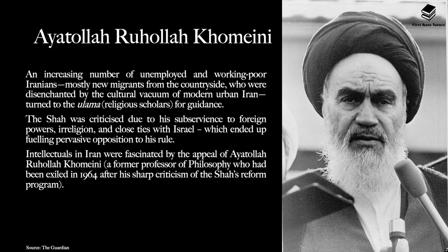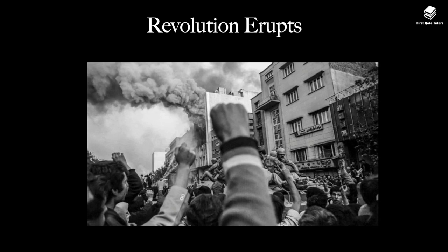The Shah was criticised due to his subservience to foreign powers, irreligion, and close ties with Israel, which ended up fuelling pervasive opposition to his rule. Intellectuals in Iran were fascinated by the appeal of Ayatollah Khomeini, a former professor of philosophy who had been exiled in 1964 after his sharp criticism of the Shah's reform programme. He ultimately played a significant role in the eruption of the revolution.